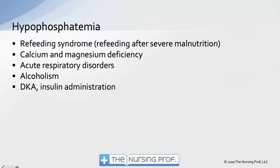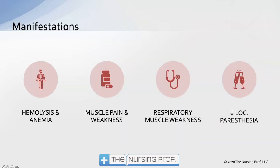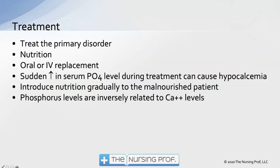Low phosphorus can occur with calcium and magnesium deficiency. Interestingly, acute respiratory disorders can cause low phosphorus, and low phosphorus can in turn cause more respiratory distress — a vicious cycle. Symptoms include hemolysis, anemia, muscle pain and weakness, respiratory muscle weakness, and decreased level of consciousness, potentially requiring intubation and ventilation. When replacing phosphorus, raise the level slowly — a sudden increase in serum phosphate can cause hypocalcemia. Oral replacement is preferred.